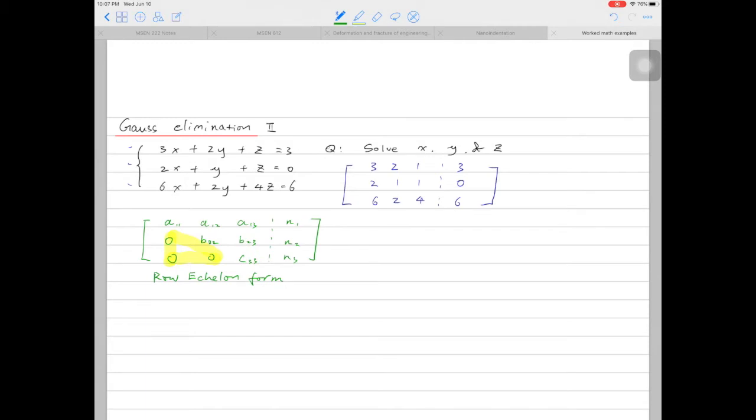Let's start the Gauss elimination process. So the first entry we like to eliminate is this one here, the first entry of the second row. In order to remove this entry, what we need to do is row 2, multiply by 3, and divide it by 2, then minus row 1.